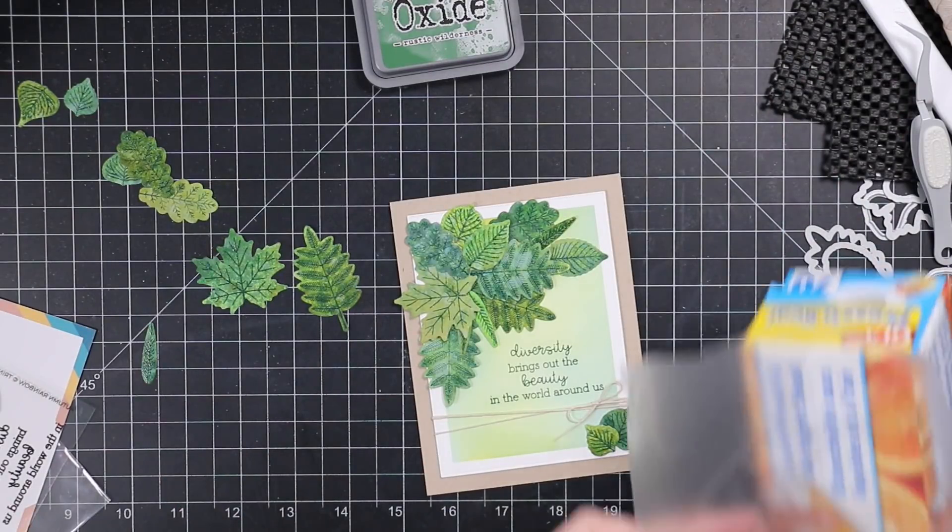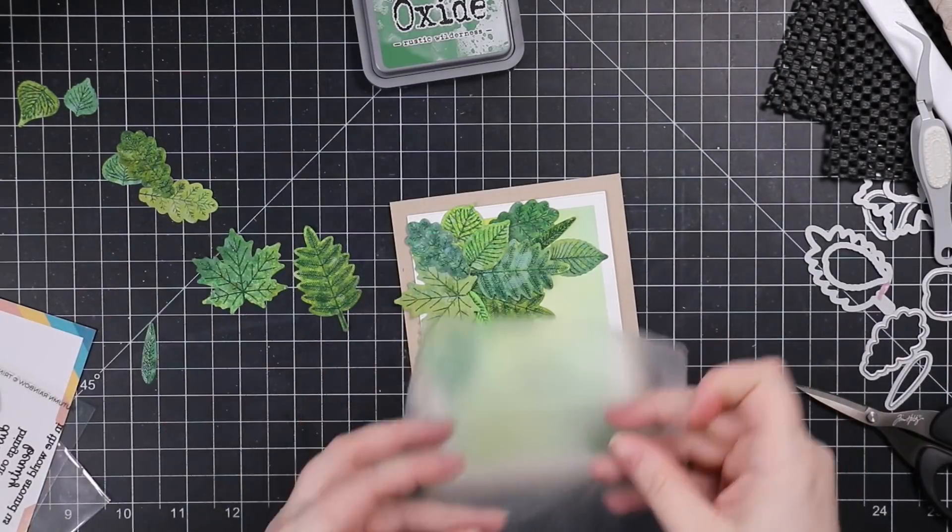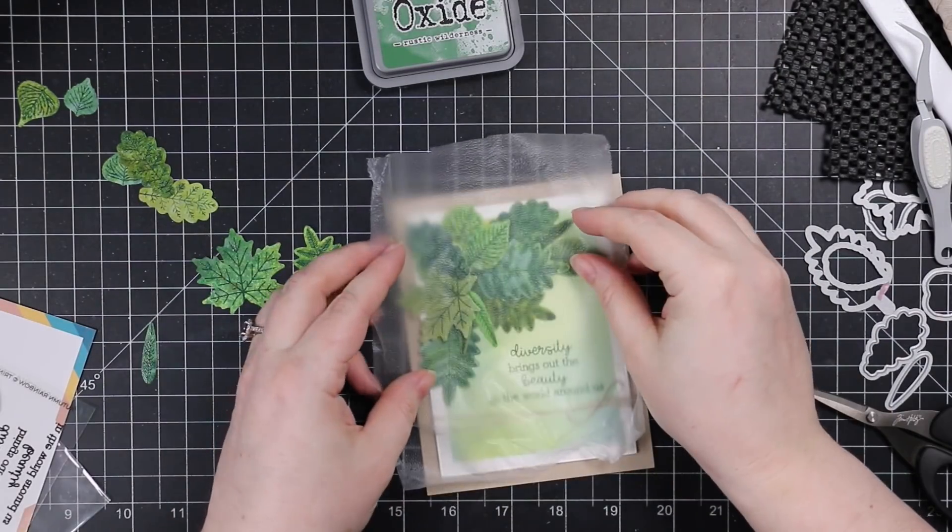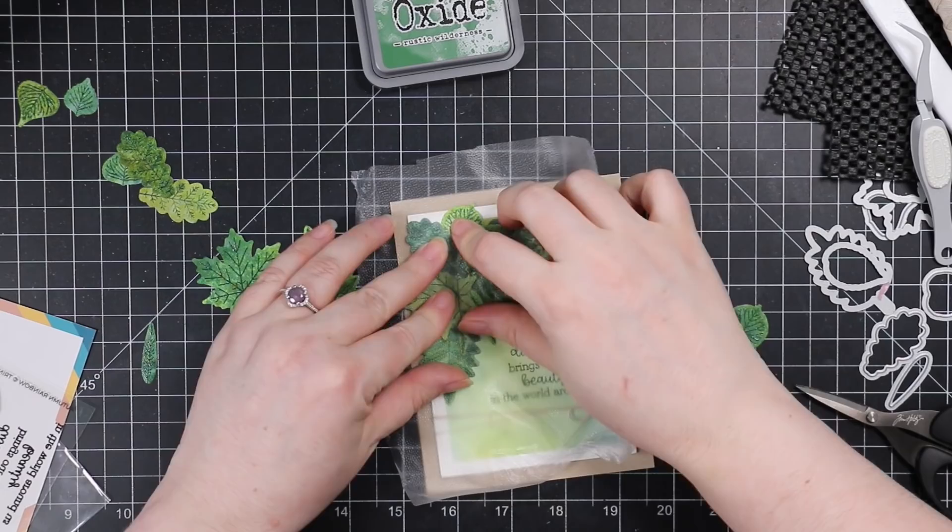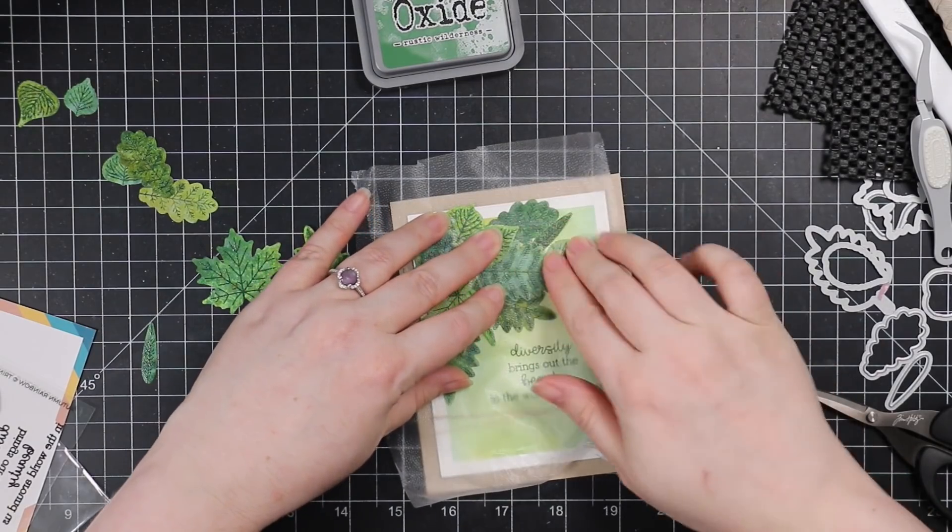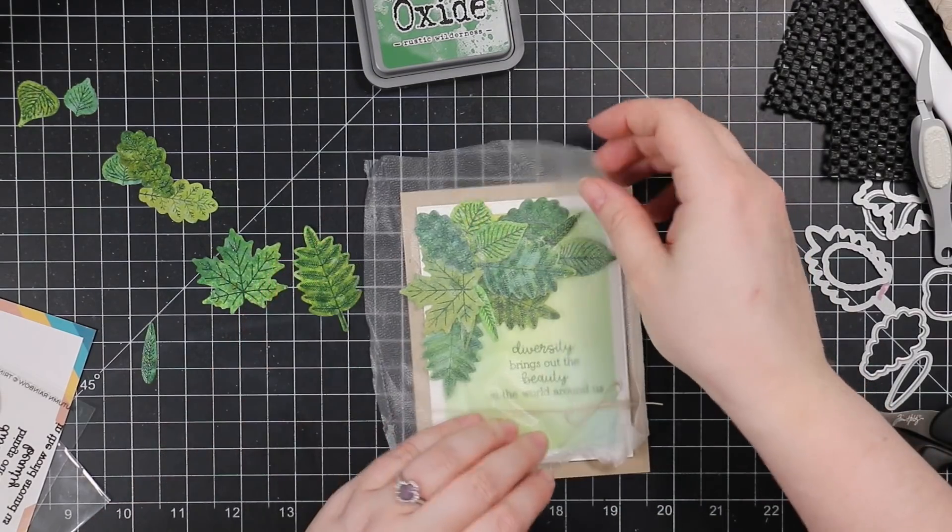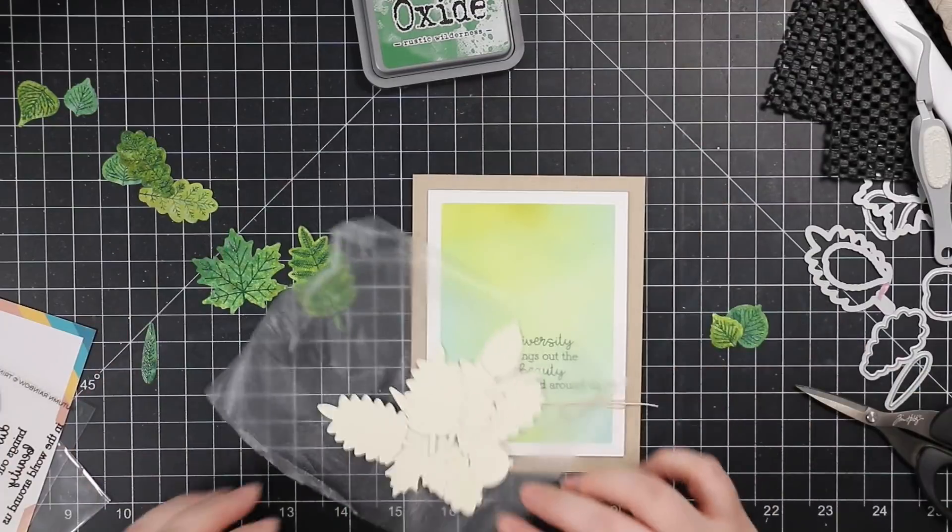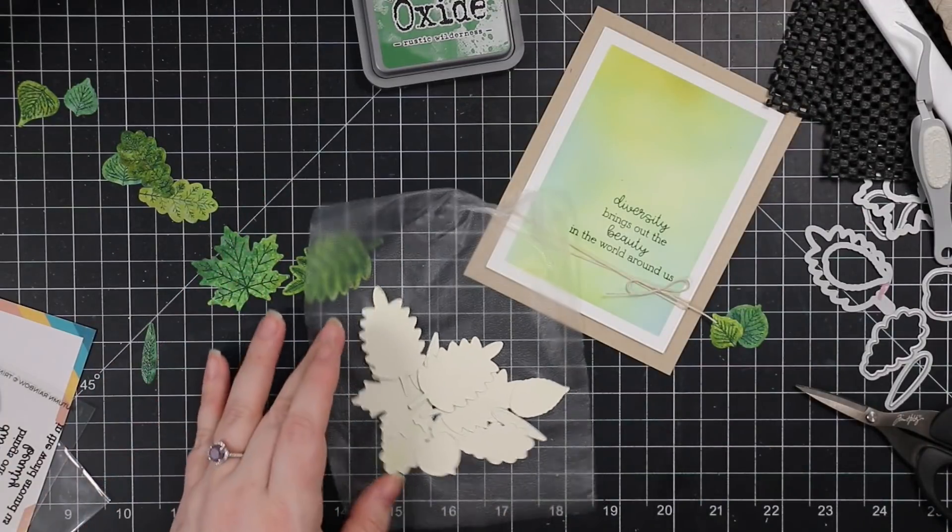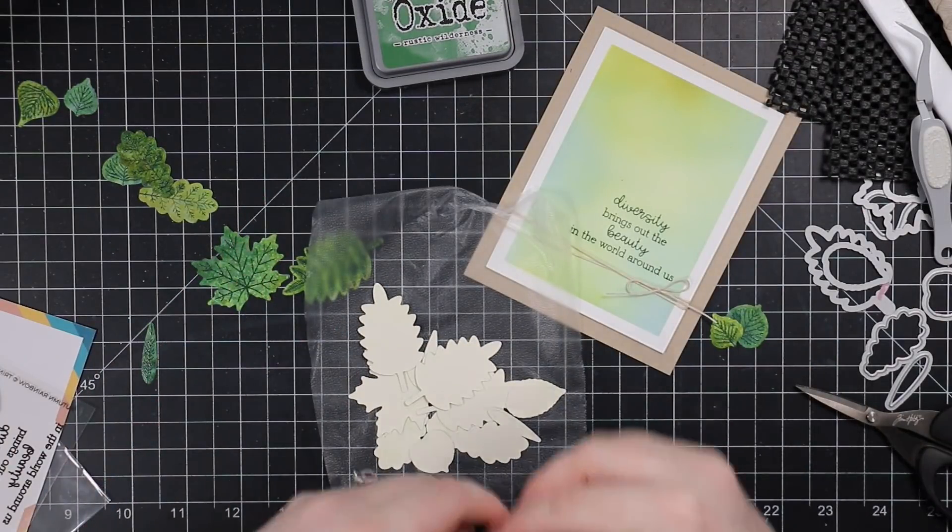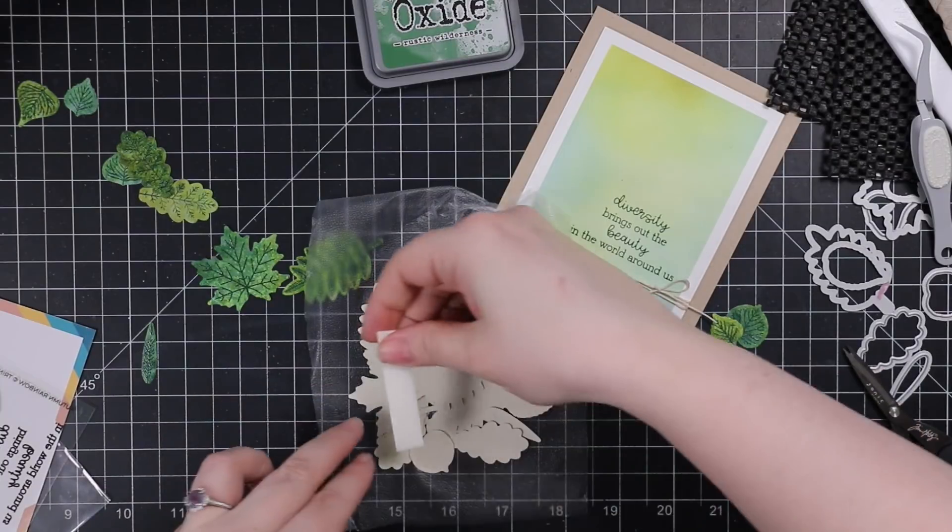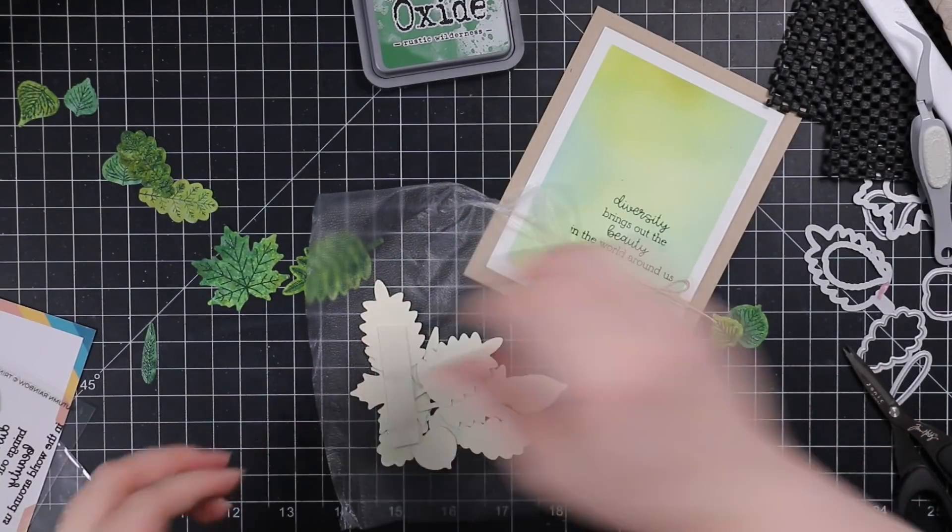So once I had my cluster arranged and I was happy with it, another technique I've shown many times, press and seal. Gotta have a roll of this in your craft room. You just, you need to have it in your life. It comes in handy for so many things, but I keep a roll specifically in my craft room. I keep this piece. I use the same piece over and over. I've had this roll for so many years in here. It's ridiculous because I'll keep using the same piece over and over again until you can't use it anymore.